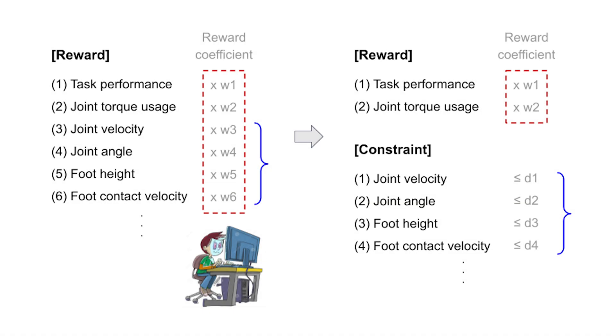Second, the engineering process is more straightforward and less time-consuming, since most of the rewards can be defined as constraints. Fewer reward coefficients need to be engineered.